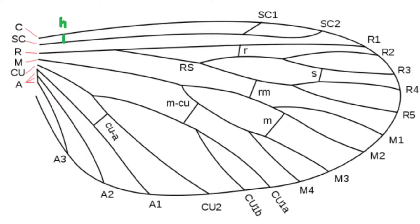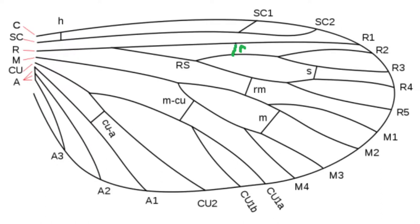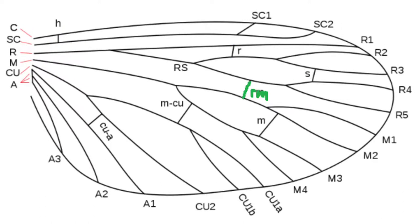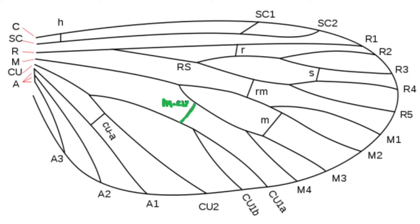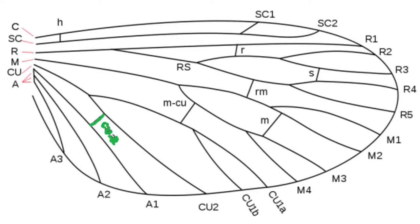The first one is the humeral. The second is the radial. Then the sectorial. The radiomedial. The medial. The mediocubital. And finally the cubital anal.